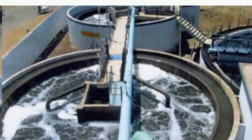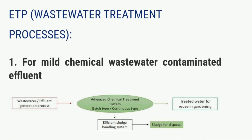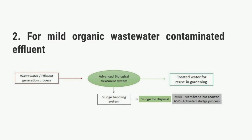Here are some treatment types. For mild chemical wastewater contaminated effluents, the effluent is processed with an advanced chemical treatment system, and the treated water is used for gardening while the sludge is disposed off. For mild organic wastewater contaminated effluents, the process uses an advanced biological treatment system, and the sludge is treated by MBR and ASP.